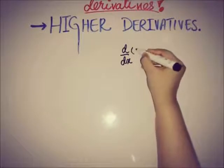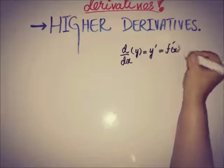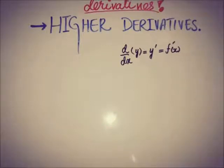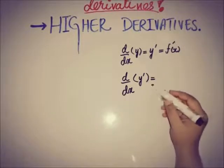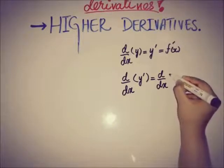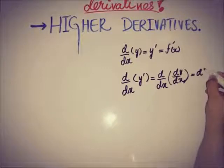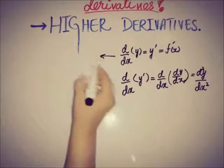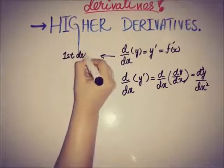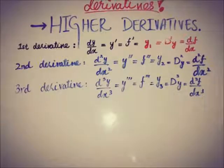We denote the rate of change by d/dx, where y is any function, by y-prime, or also written as f(x)-prime if the function depends upon x. The rate of change of y-prime is written as d/dx of dy/dx, which equals d²y/dx². This is the first derivative, and d²y/dx² is known as the second derivative.